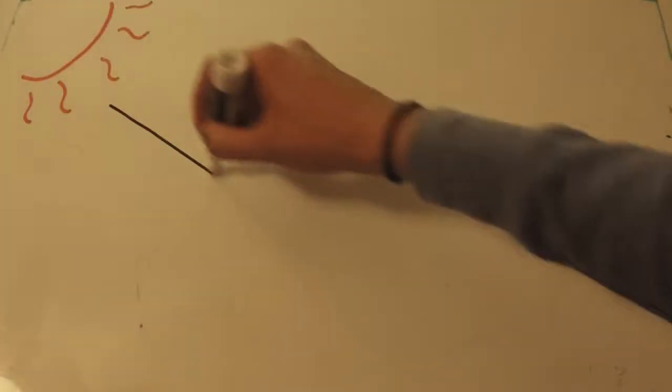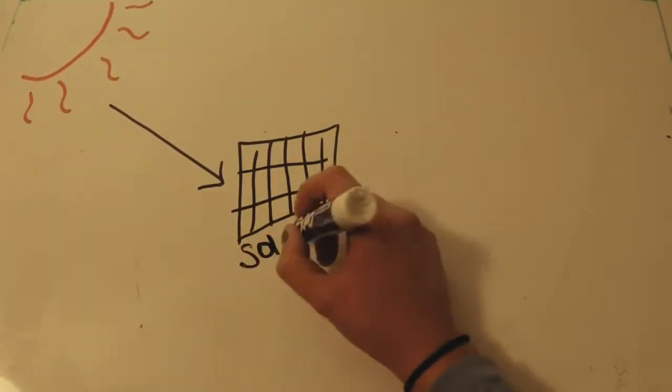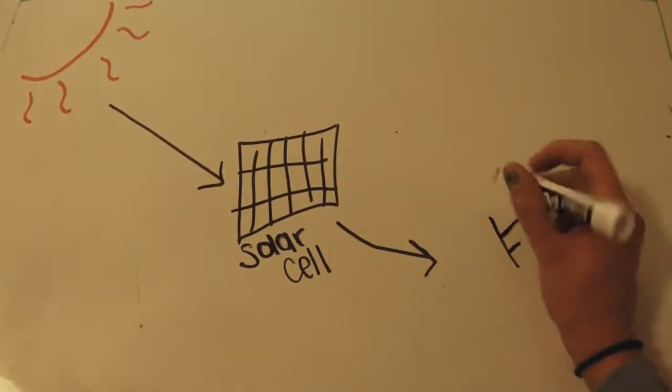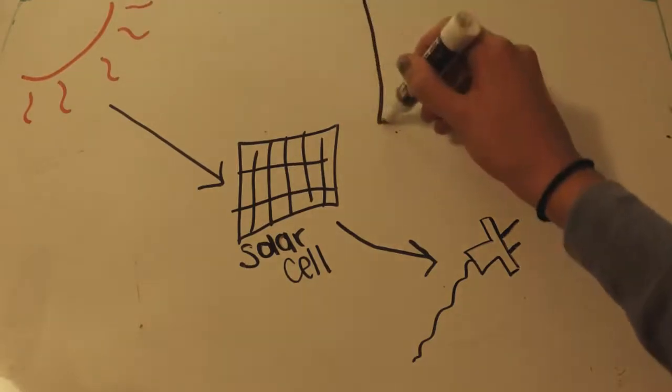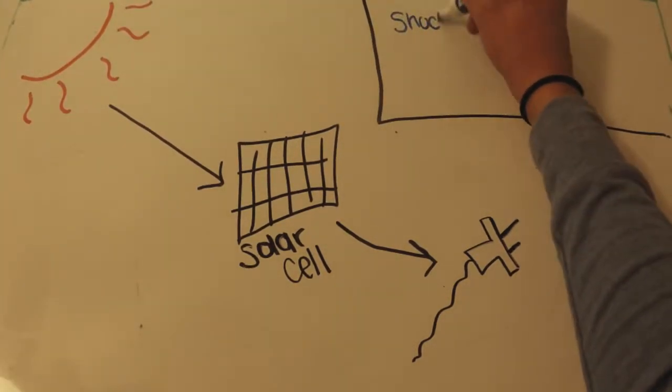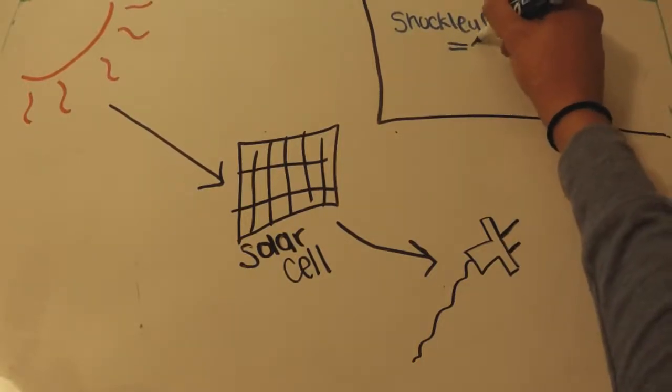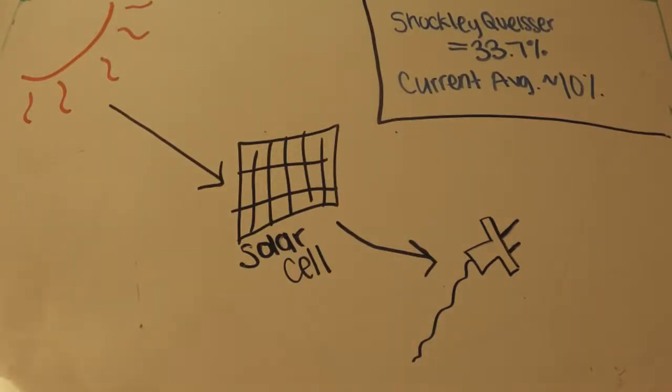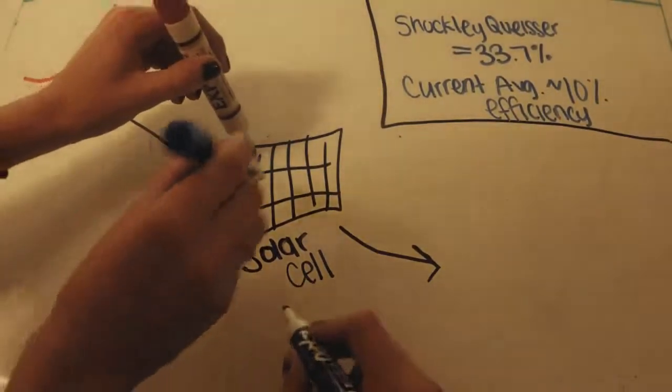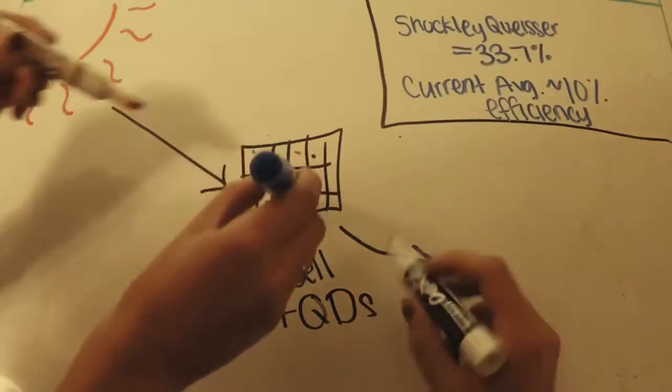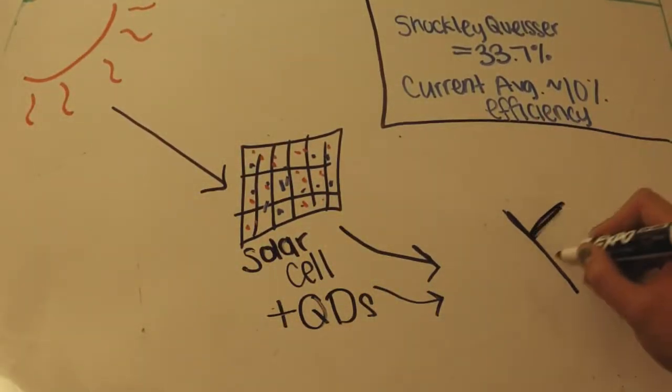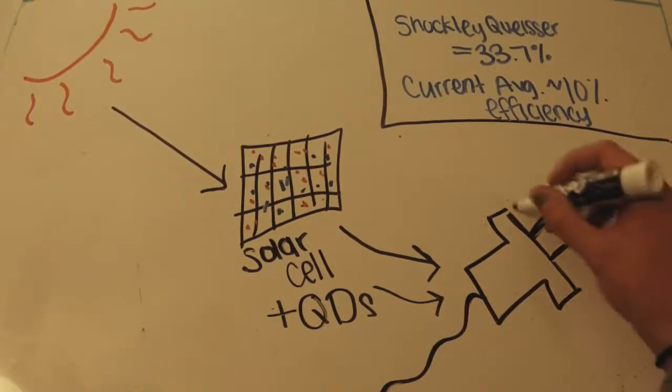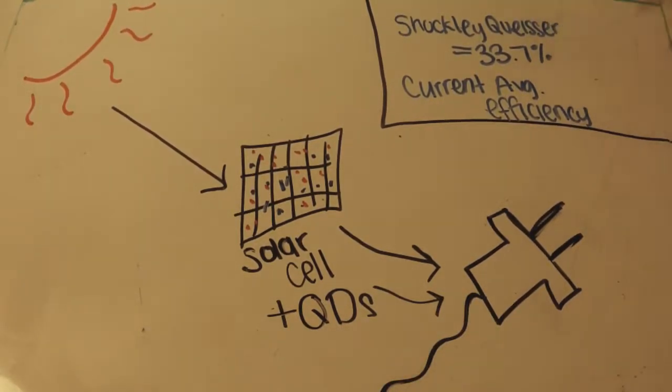But quantum dots have much larger implications, such as their potential use in renewable energy. Solar cells have limits to their effectiveness in converting the energy from the sun in the form of photons into usable electrical energy. This maximum conversion of sunlight to electrical energy is called the Shockley-Queisser limit and places a constraint that only 33.7 percent of sunlight can be converted into electricity in solar cells. The average efficiency of modern solar cells is currently around 10 percent. However, since quantum dots are activated by a wide range of wavelengths from the sun, when they emit their wavelengths of light, those can be additionally captured by the solar cells to be converted into electricity, increasing the efficiency of the solar cell, therefore bringing it closer to the Shockley-Queisser limit.